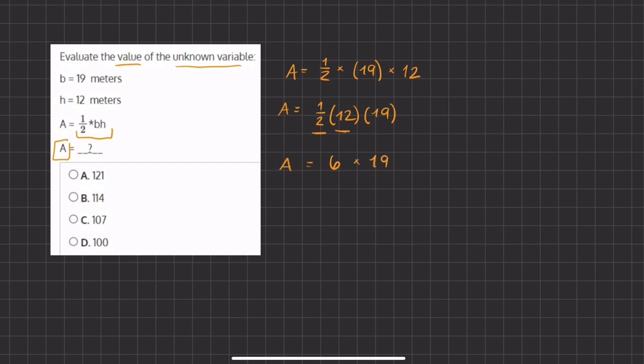Now a half times 12 gives us 6 times 19 which all this equals A. If you don't know what 6 times 19 is, we can break up this 19 into 10 and 9 and multiply the 6 into both of the numbers and add. So we have 6 times 10 which gives us 60 and 6 times 9 which gives us 54. When we add these two numbers we get 114, which is the multiplication of 6 times 19, which is also the value of A, which is going to be answer B in this problem.